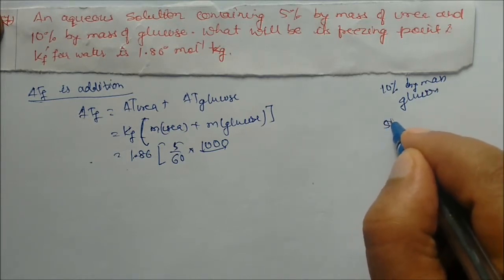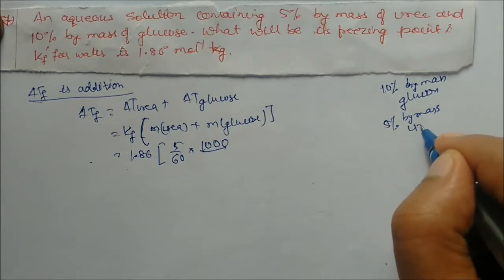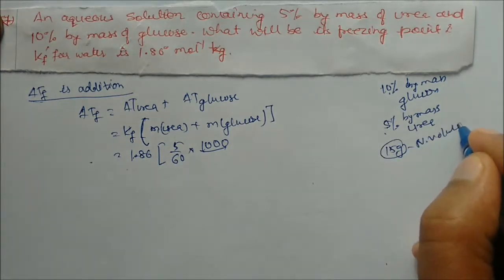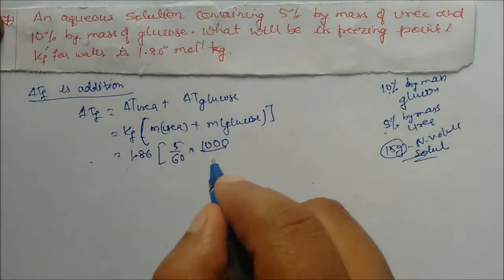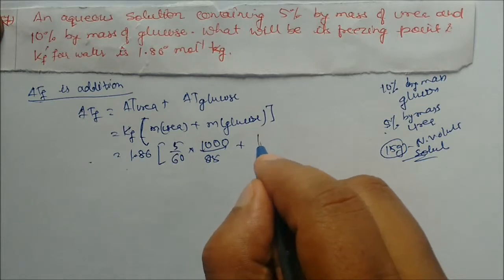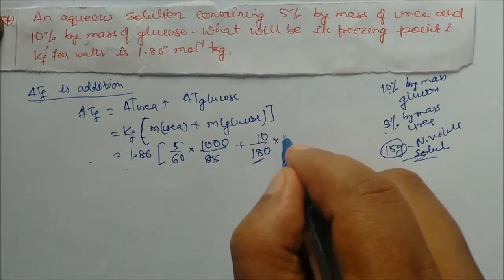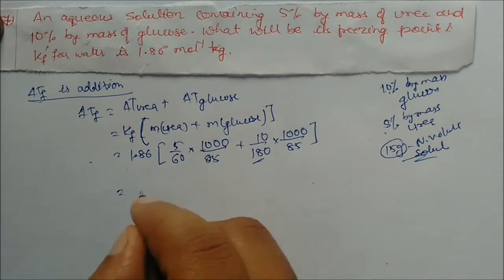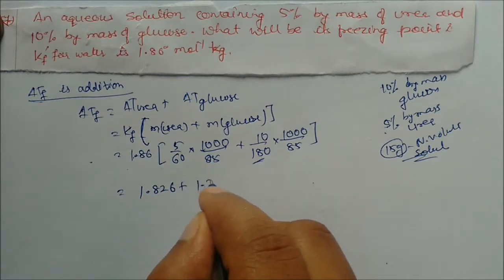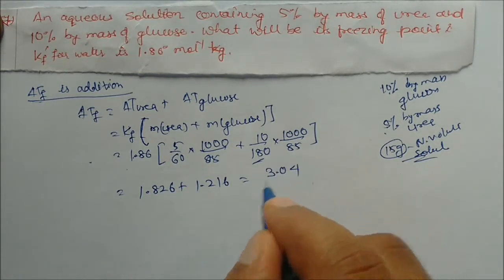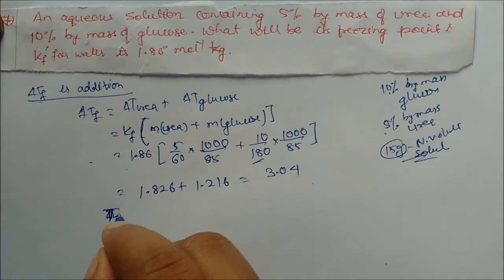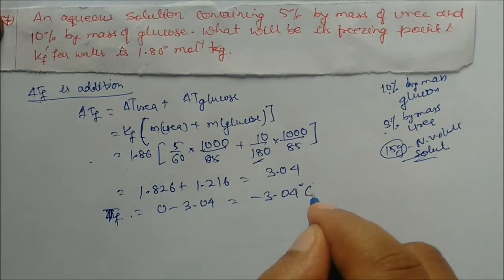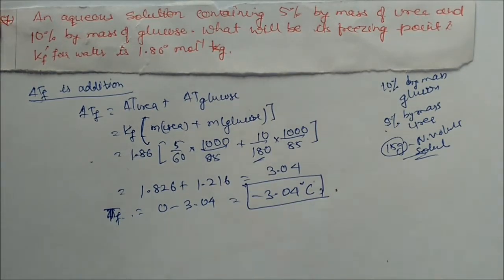Out of 100 grams of solution, 5% urea + 10% glucose = 15 grams solute, so 85 grams is solvent. For glucose: molality = (10/180) × (1000/85). Solving: delta T(urea) = 1.826, delta T(glucose) = 1.216. Total delta Tf = 1.826 + 1.216 = 3.04. Freezing point = 0 − 3.04 = −3.04°C. This is the answer.